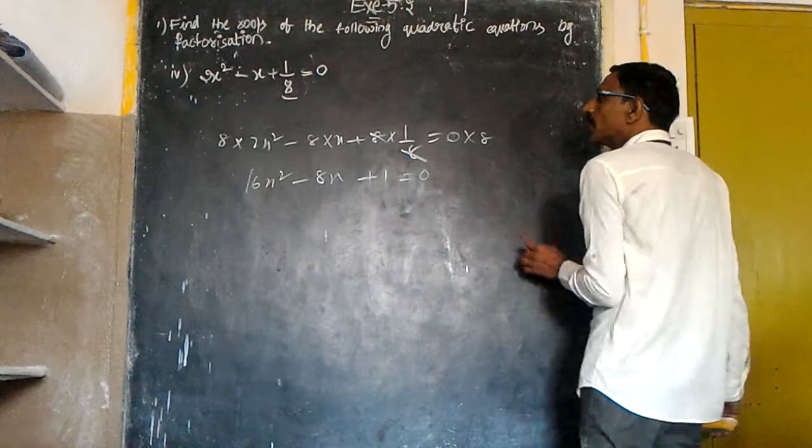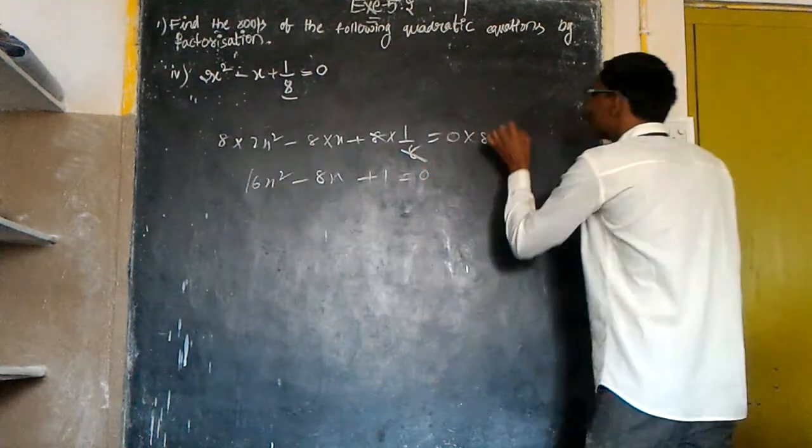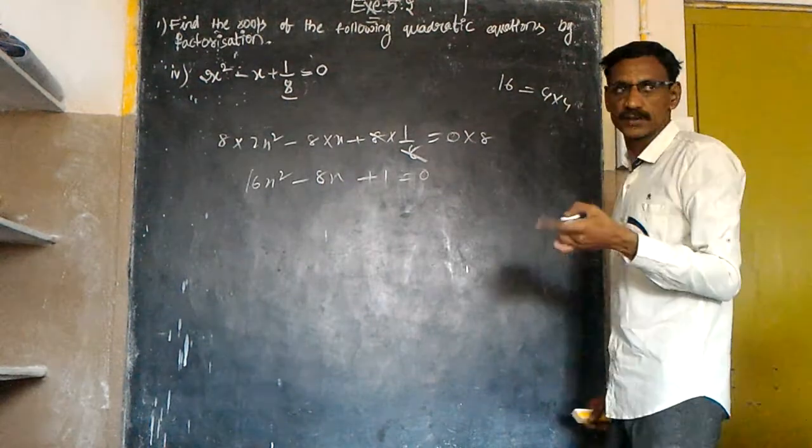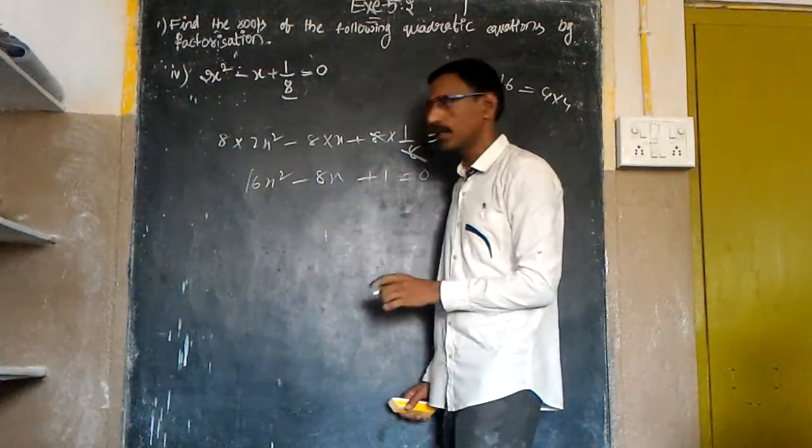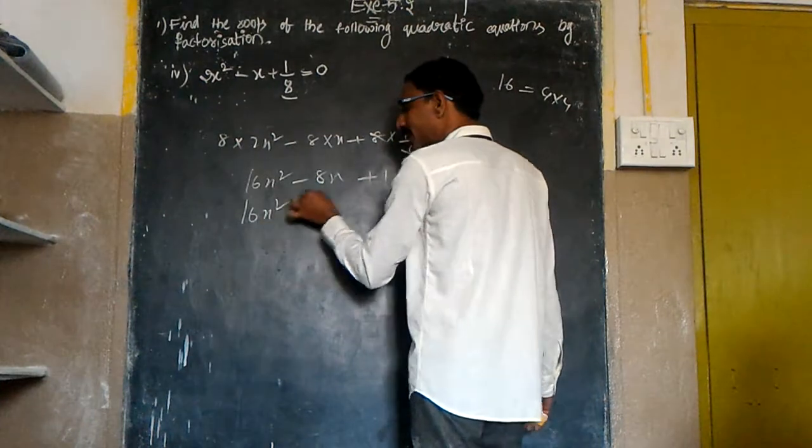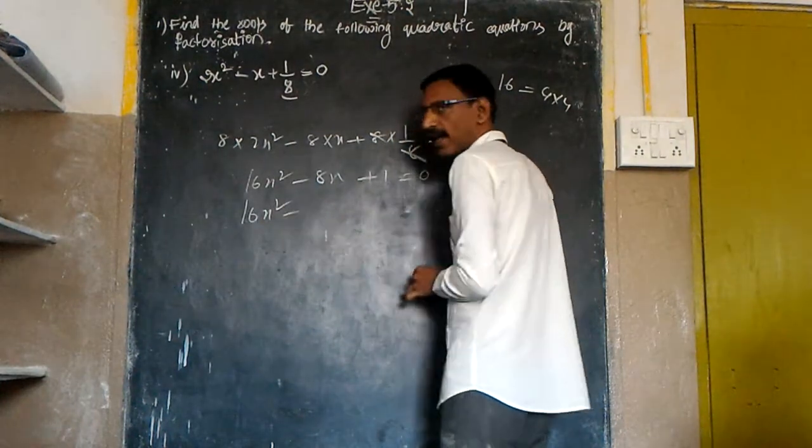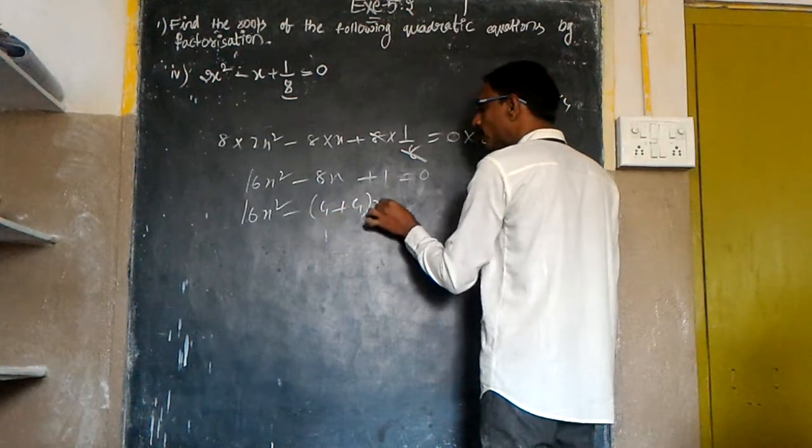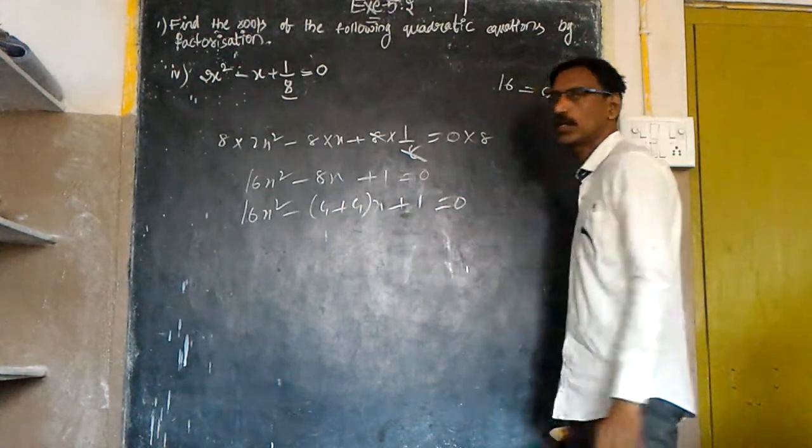So here, 16 times 1 is 16, again 4 times 4 is 16, 4 plus 4 is 8. So I would like to write 16x square as it is, minus I will write minus as it is. In place of 8, I will write 4 plus 4 into x plus 1 is equal to 0.